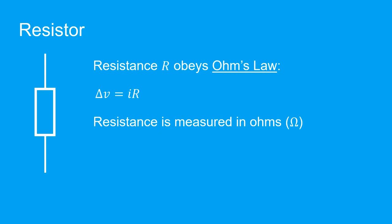Its resistance, R, obeys Ohm's law which states that the potential difference across the resistor, delta V, is given by the current I through the resistor multiplied by its resistance R.